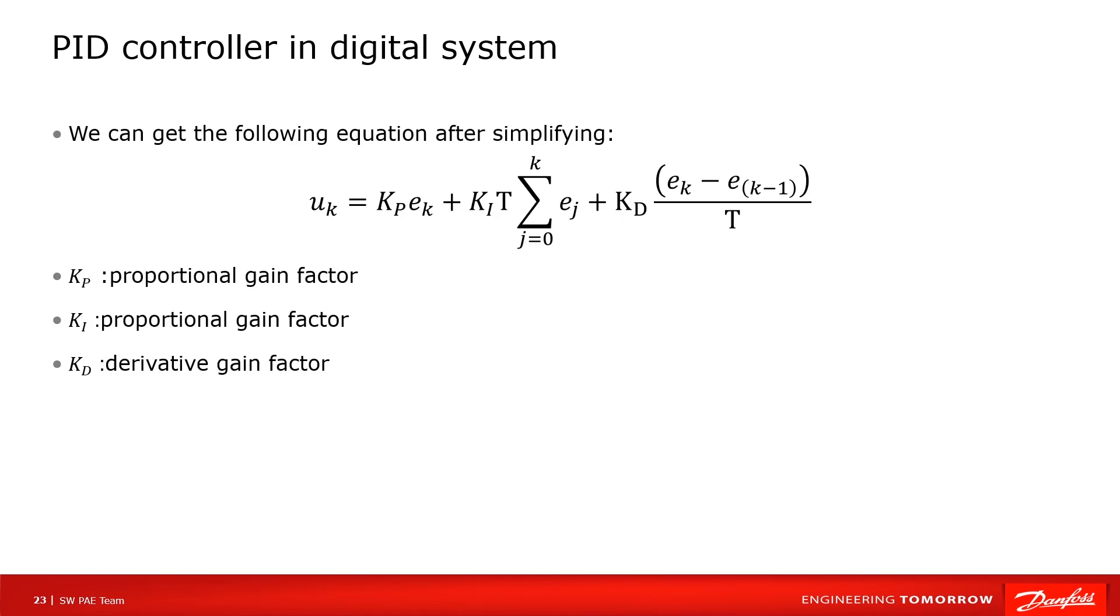Kp is the proportional gain factor. Ki is the integral gain factor. Kd is the derivative gain factor.